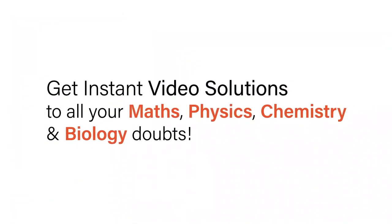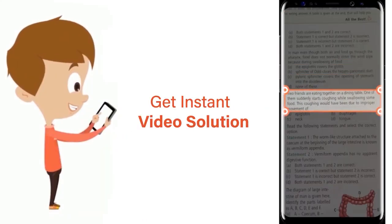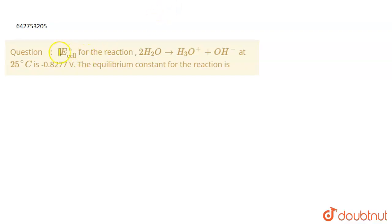With Doubtnet, get instant video solutions to all your maths, physics, chemistry and biology doubts. Just click the image of the question, crop it, and get an instant video solution. Download Doubtnet app today. The question is: E°cell for the reaction 2H2O gives H3O+ plus OH- at 25 degrees Celsius is -0.8277 volts. Equilibrium constant for the reaction is?